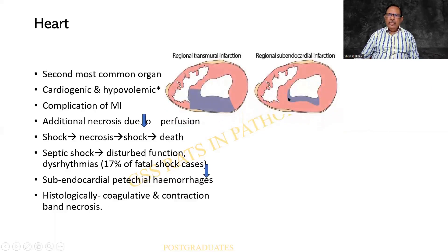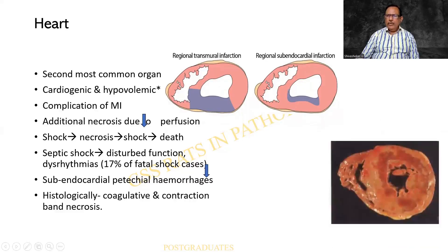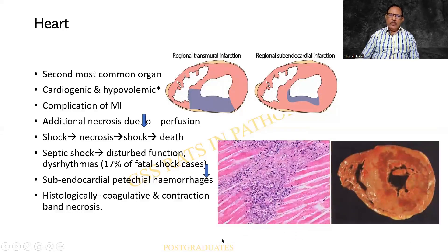Coming to the infarction — this is the endocardium, and below it the gray region is the region of infarction, so it is sub-endocardial. Whereas when it involves the entire wall, it is called transmural infarction. This is supposed to be more common in a case of septic shock. There is ventricular hypertrophy, and there is an early stage of infarction seen in the sub-endocardial region. Microscopically at autopsy, you will find areas of karyorrhexis, karyolysis — not much inflammation amidst the viable myocardial fibers.